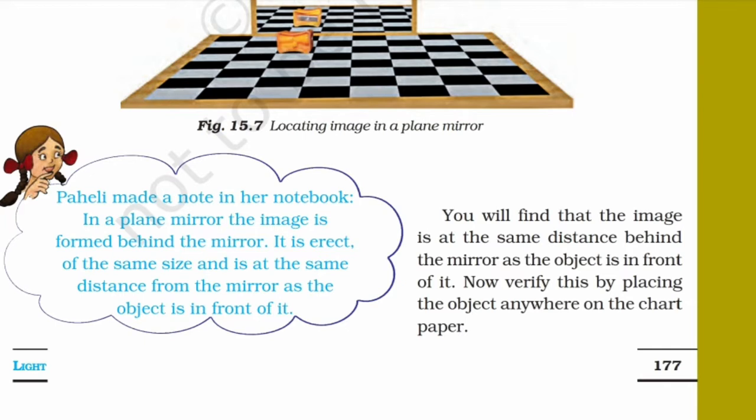If we increase or decrease the distance between the object and the mirror, the distance between the image and the mirror also increases or decreases respectively.